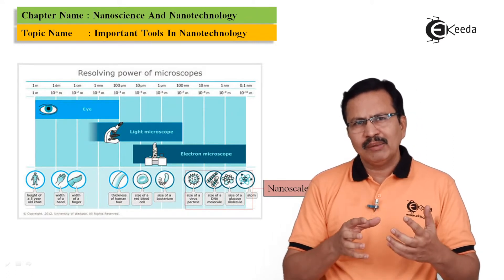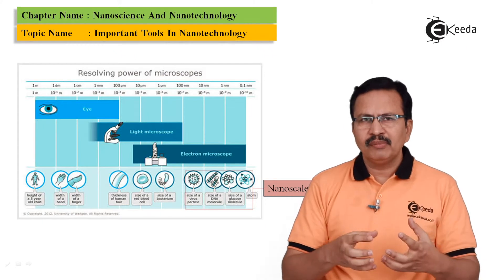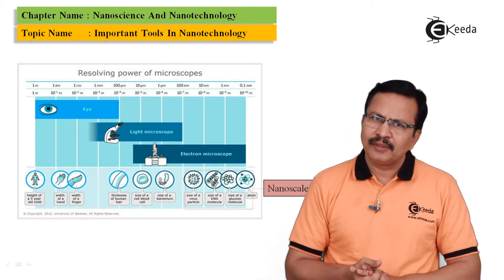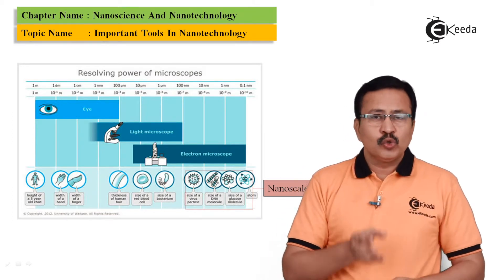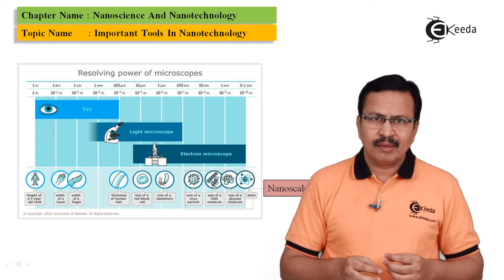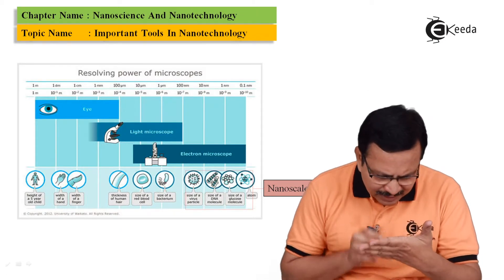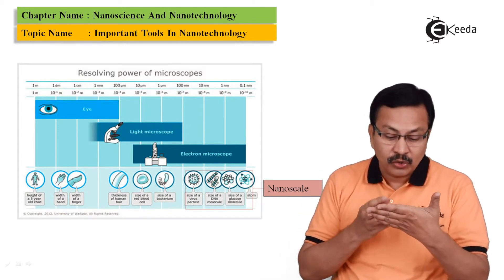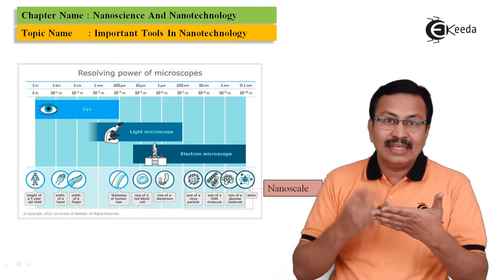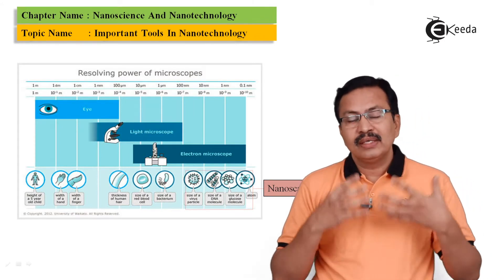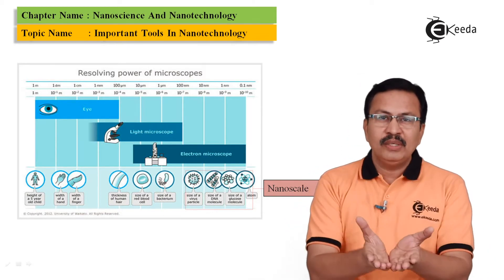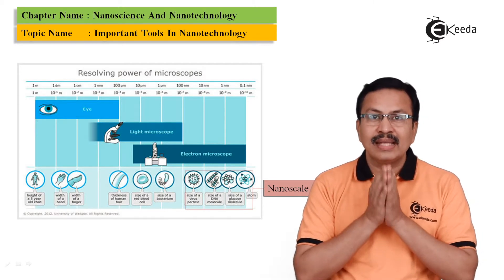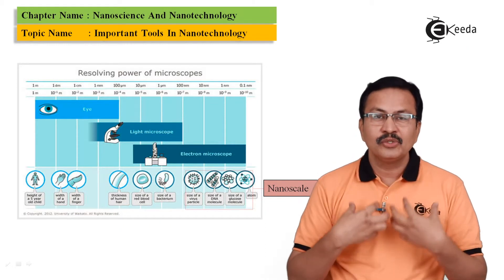Coming back to the original question: why is the resolving power of an electron microscope greater than that of the eye or an optical microscope? An optical microscope, as the name suggests, uses light. For example, even as I'm speaking to you, the signal coming on my face is that of light, which is an electromagnetic wave, and it is that signal which you actually receive and hence you are able to see me.